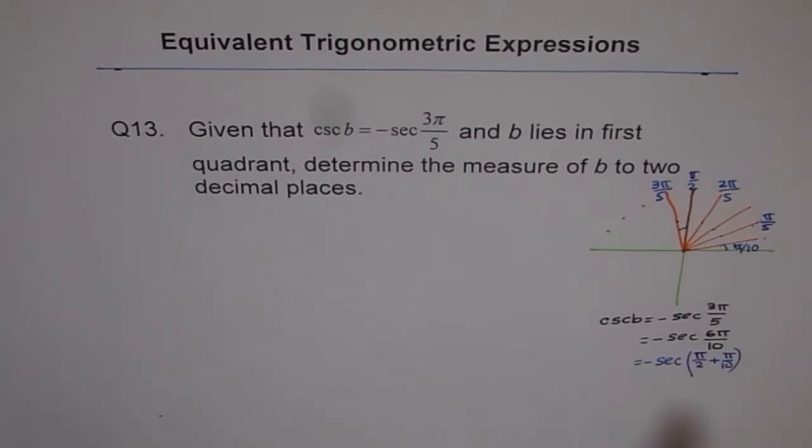Do you see that? If you do π/2 plus π/10, you will get 3π/5, correct. And so we know well, cos is negative here. So let me write down the cos rule now.